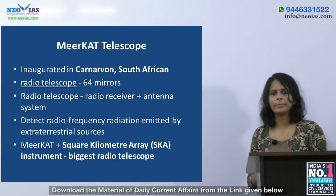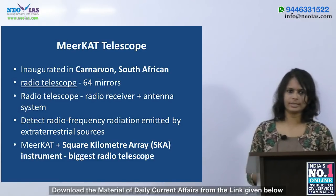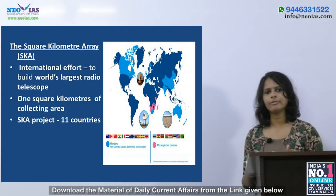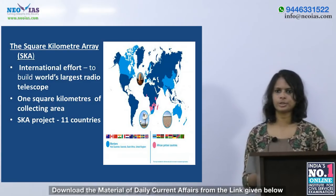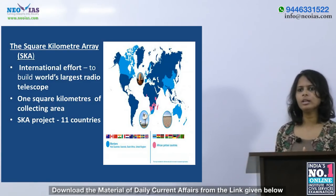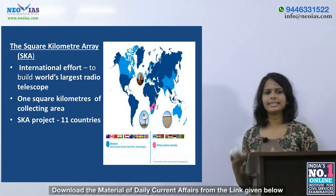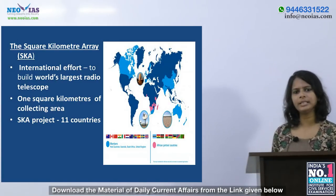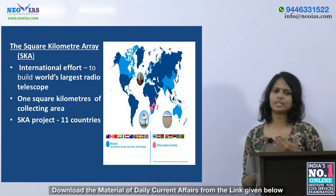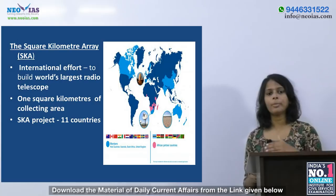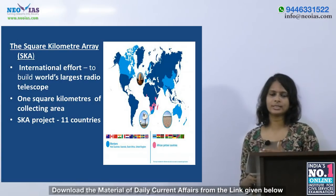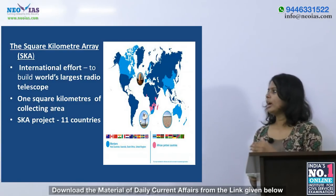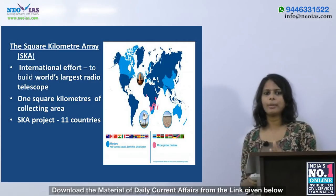Once incorporated, MeerKAT will become part of the world's biggest and most powerful telescope. The SKA or Square Kilometre Array is an international effort to build the world's largest radio telescope, eventually spanning over a square kilometre of collecting area. The SKA will have thousands of dishes and a million low-frequency antennas, enabling astronomers to survey the sky at a much faster pace than any current system. The resolution quality of the SKA project will also be much higher than the existing Hubble Space Telescope.